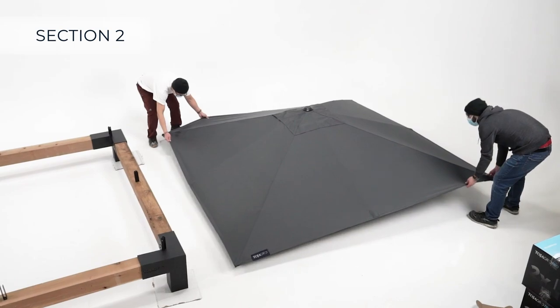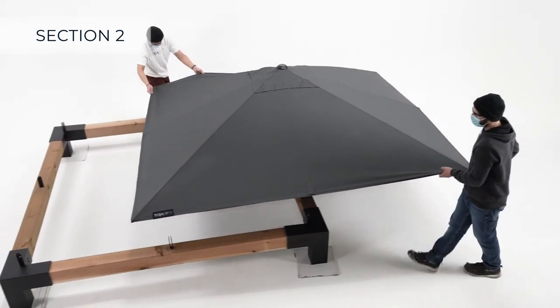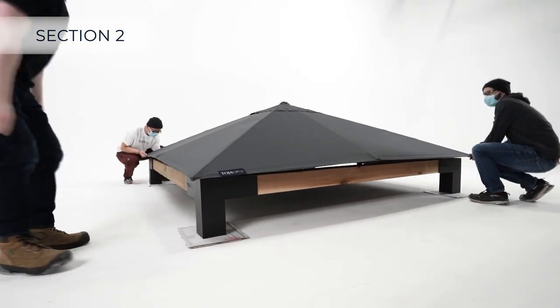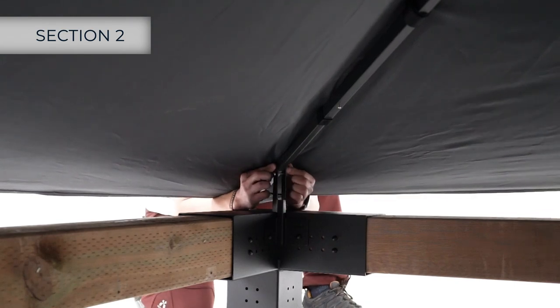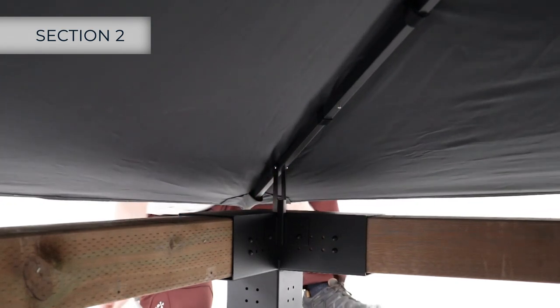Carefully place the umbrella top back onto the pergola, aligning it with all brackets. Then, fasten the umbrella top to all corner and side brackets with the provided hardware, removing all guide pins as well.